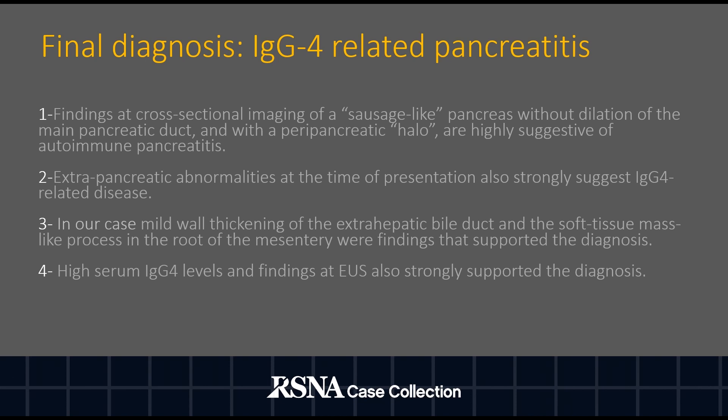Finding on cross-sectional imaging a sausage-like pancreas without dilation of the main pancreatic duct and with a peripancreatic halo are highly suggestive of autoimmune pancreatitis. Extrapancreatic abnormalities at the time of presentation also strongly suggest IgG4-related disease. In our case, mild wall thickening of the extrahepatic bile duct and a soft tissue mass-like process in the root of the mesentery were findings that supported the diagnosis.